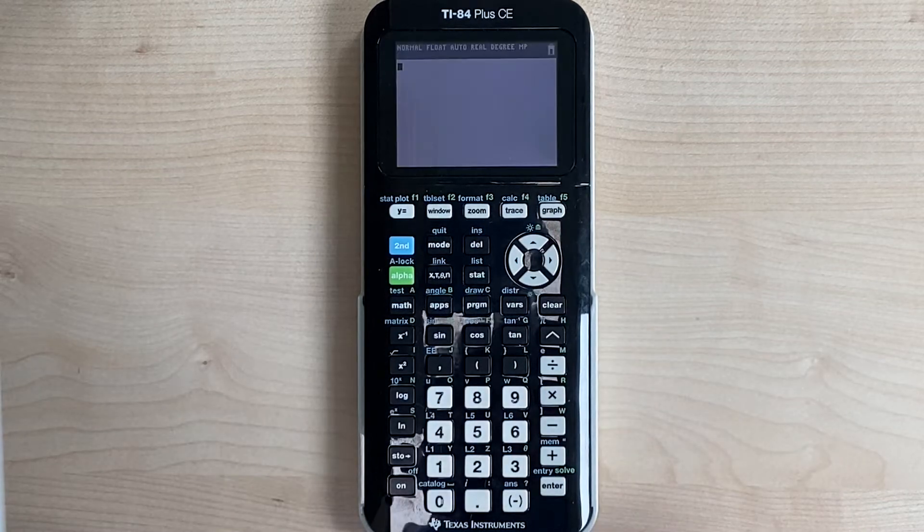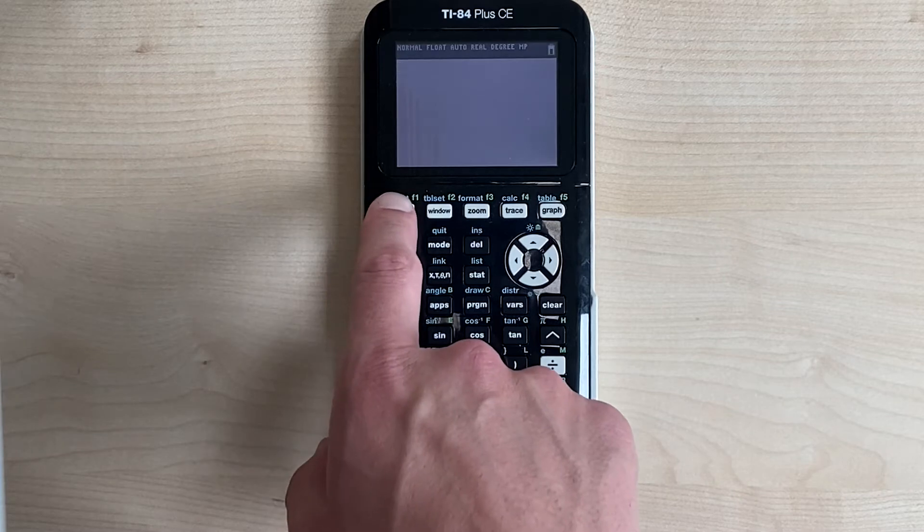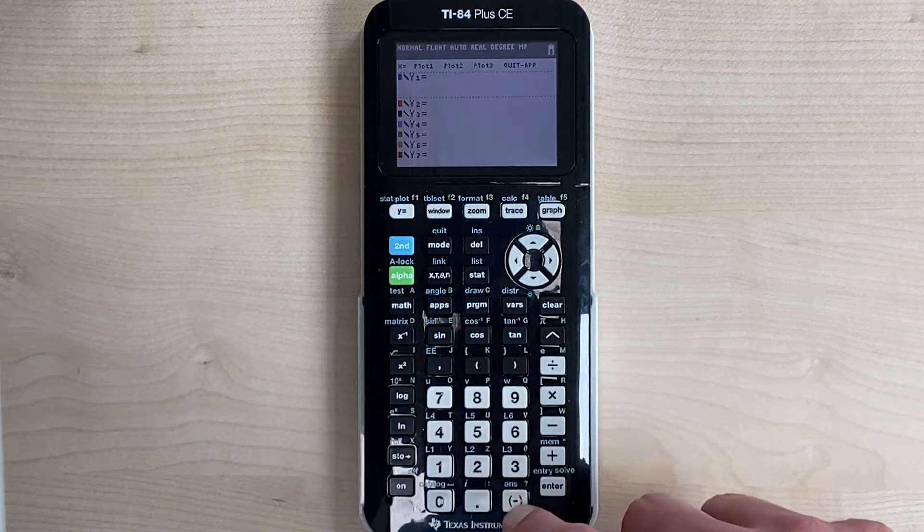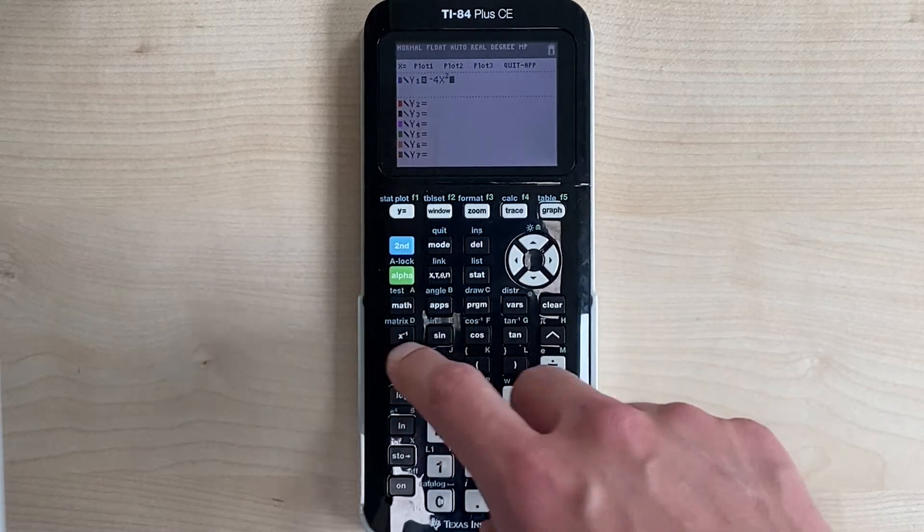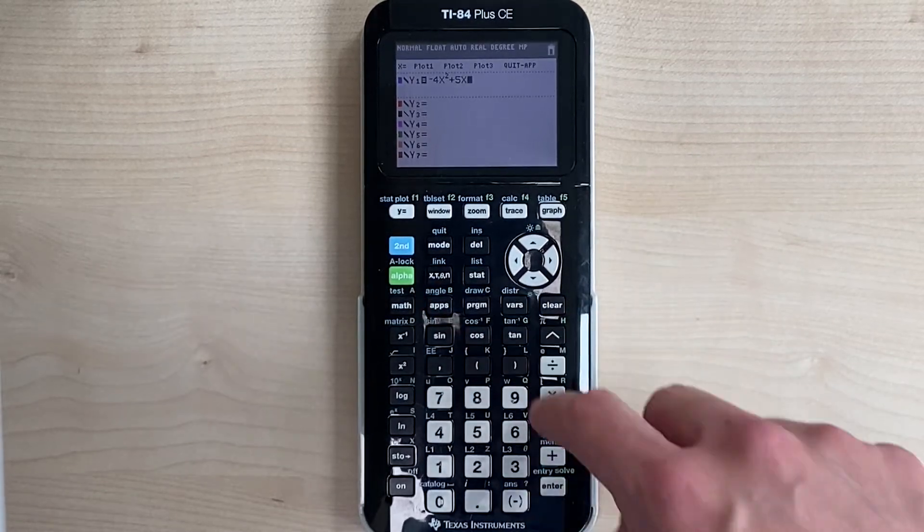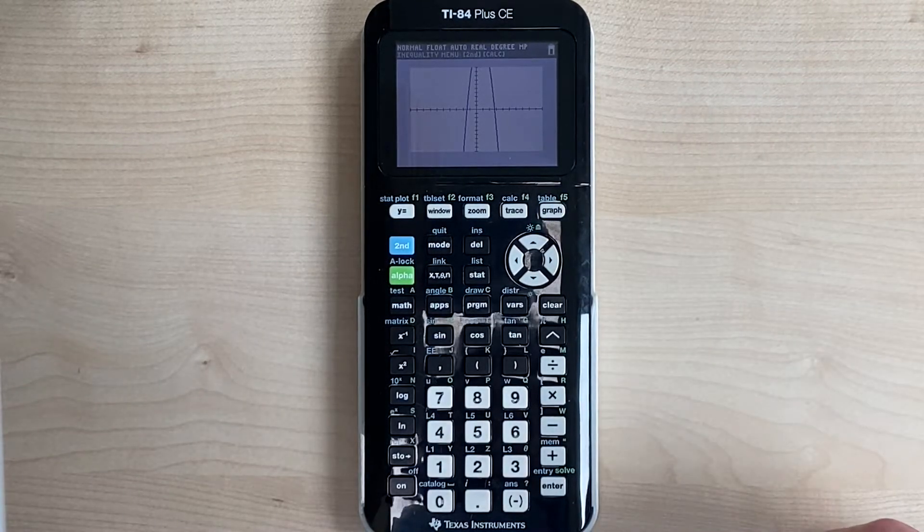So go ahead and turn it on, and we're going to start off by graphing an equation. We're going to y equals, and we're going to graph a quadratic equation: negative 4x squared plus 5x plus 16. So go ahead and hit the graph button, and there's our quadratic.